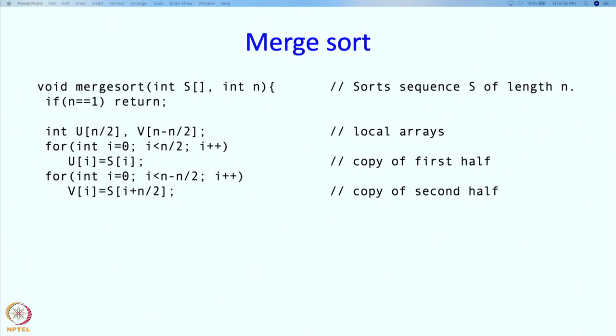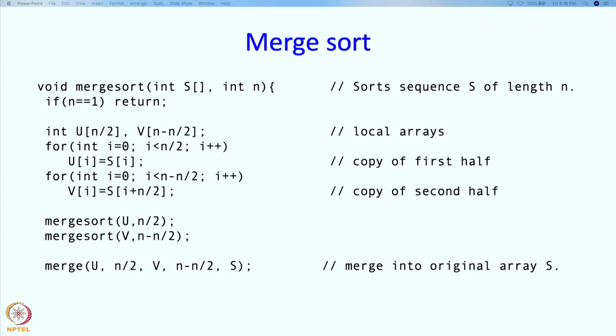How do I do that? This is where recursion comes to my rescue, so I am going to just issue this call: sort sequence u whose length is n by 2. And similarly, I am going to sort sequence v whose length is n minus n by 2. At this point, I have those 2 sequences sorted in u. They went into merge sort in u and they are coming back in u.